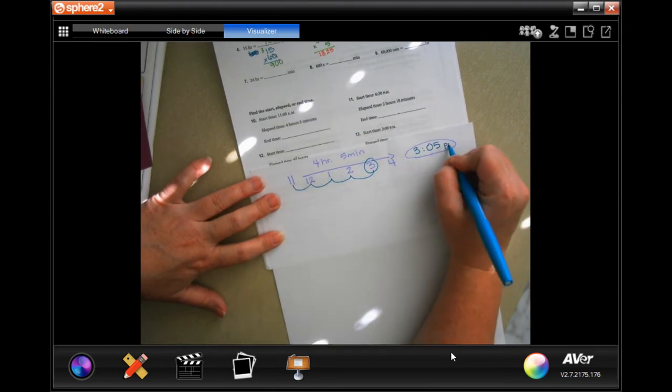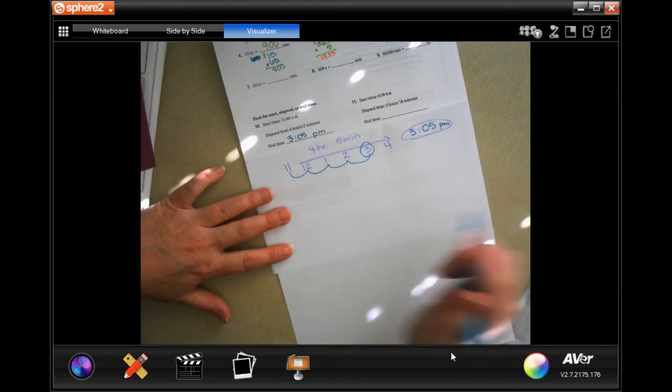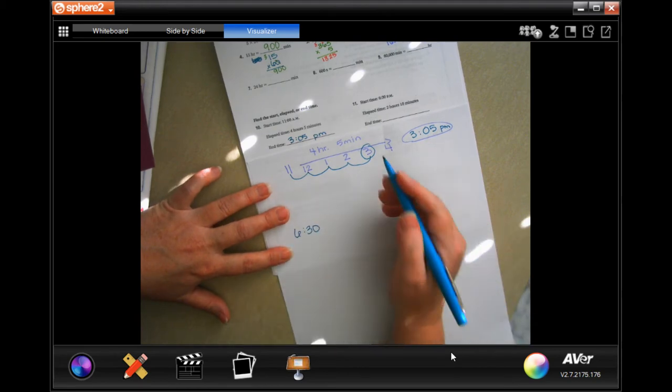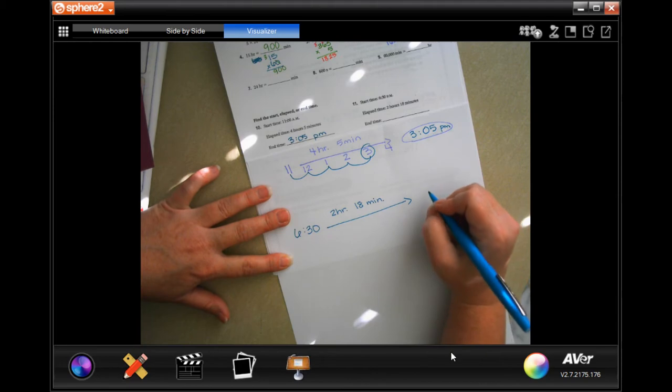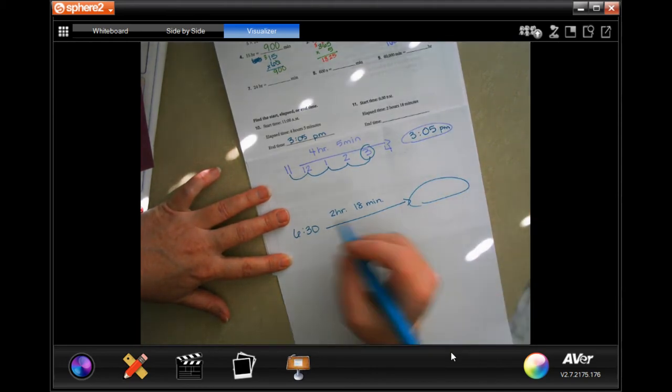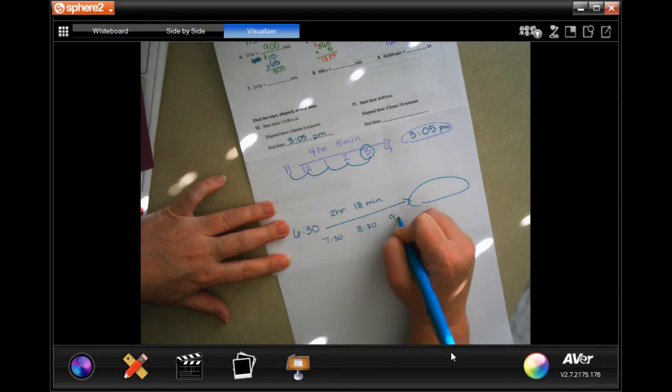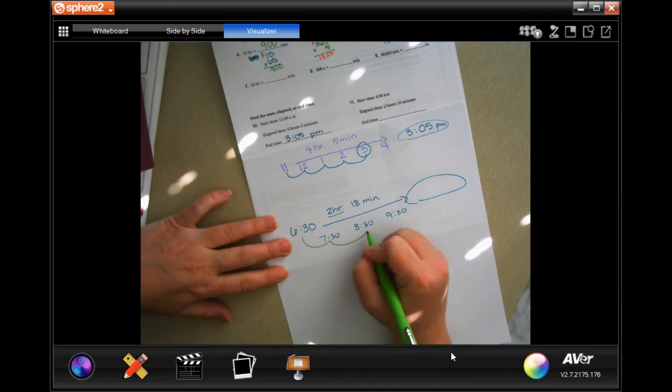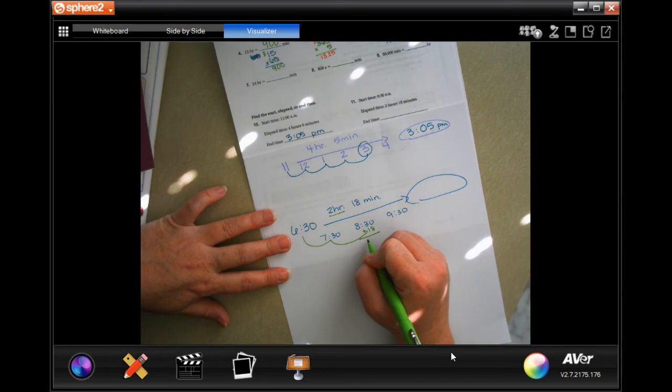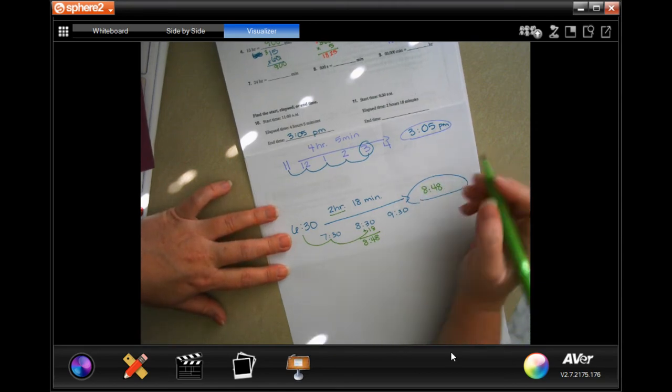Start time 6:30, elapsed time 2 hours 18 minutes, and it wants to know the end time. I'm going to go from 6:30 to 7:30, 8:30. So two hours means 8:30. Then I'm going to add on those 18 minutes. If I get more than 60 then I have to round the hour up, but if I don't then I'm fine. 8:48 and we're still in PM.